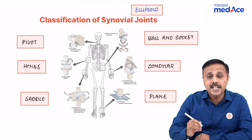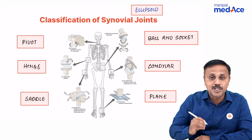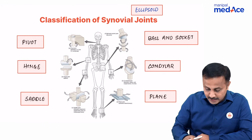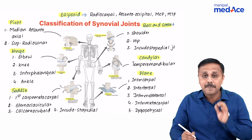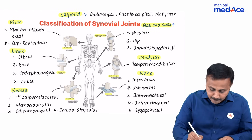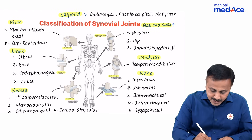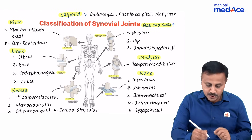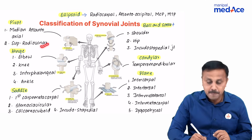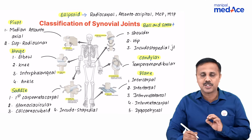What are the examples for each of these joints? For the pivot joint, the best examples are the median atlanto-axial joint and the superior radial nerve joint.